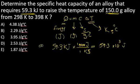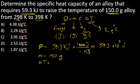So Q is 59.3 times 10^3 and m is 150 grams. What about delta T? Delta T is from 298 to 398, so delta T is final minus initial, and that will give me 100 Kelvin.